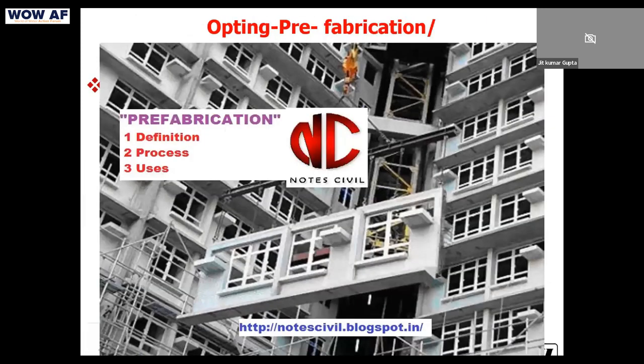Prefabrication has distinct advantages here. When construction moves off-site, you eliminate on-site watering of bricks and reduce a lot of water consumption. All building components are manufactured in a factory where curing is done with the same water reused in a closed loop. Shifting from on-site to off-site construction technology will make a major difference.